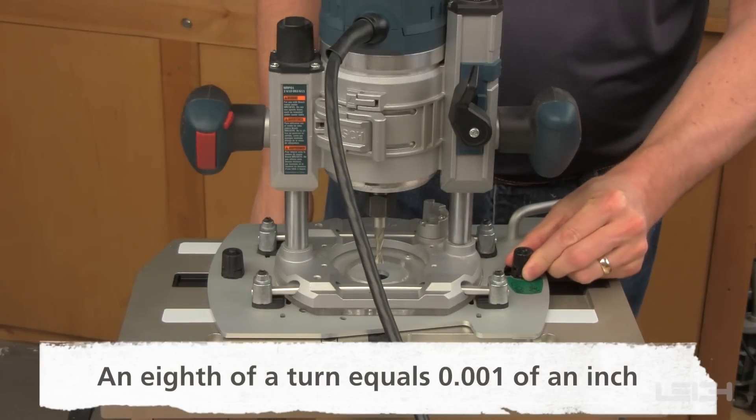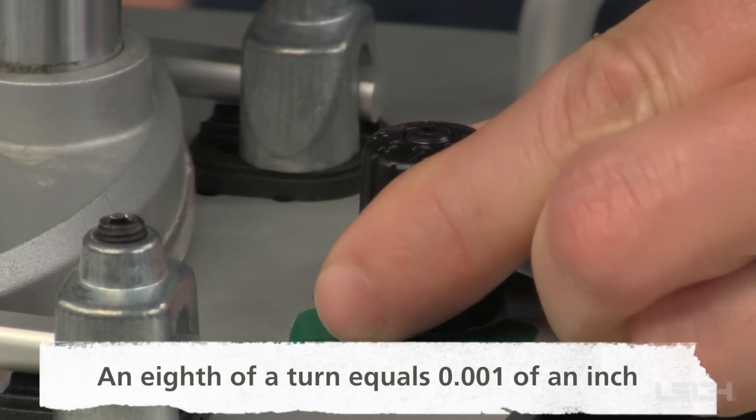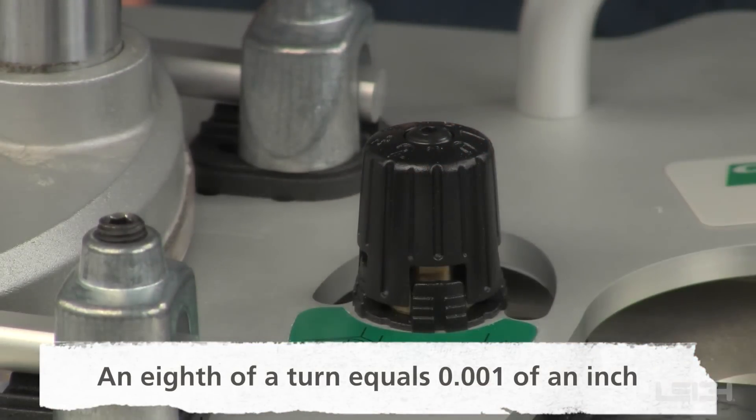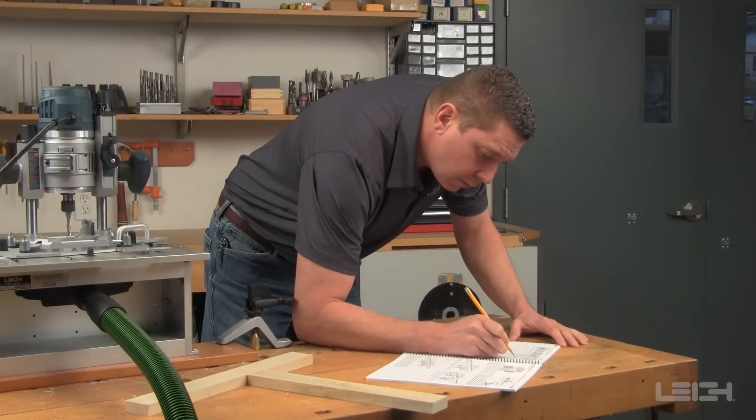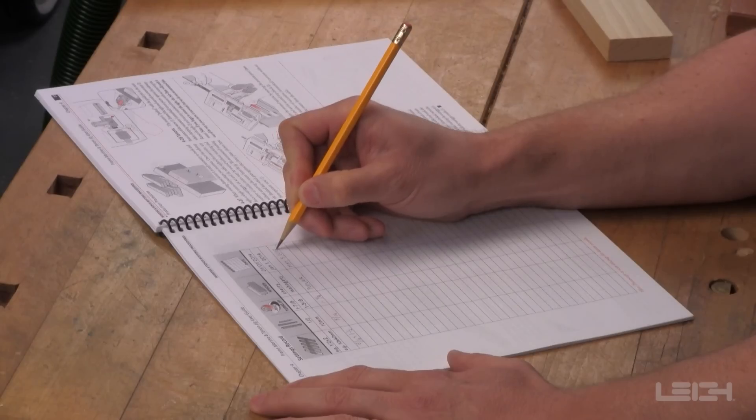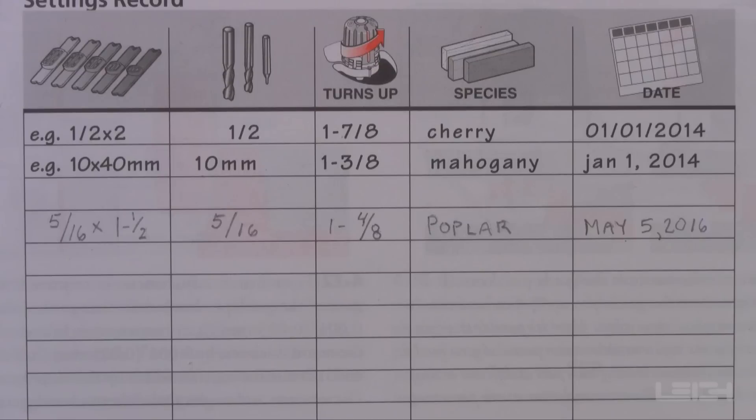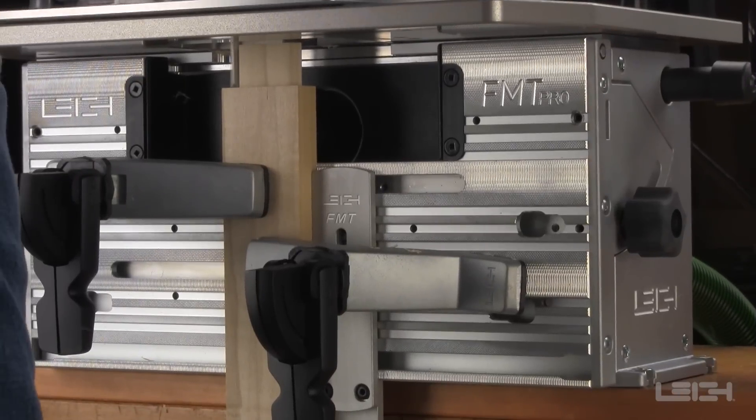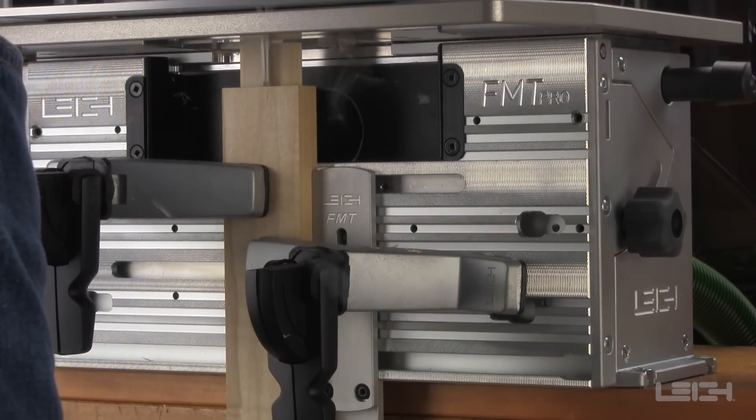Each eighth of a turn of the guide pin knob changes the joint glue line fit by a thousandth of an inch. Once the correct bit guide combination is established, record the settings in your user guide for easy repeatability the next time you route mortise and tenon joints on the Lee FMT Pro.